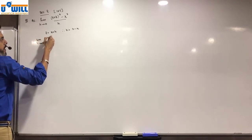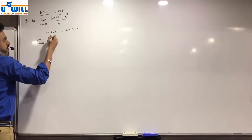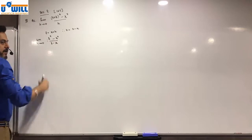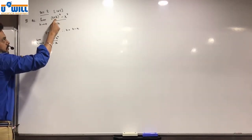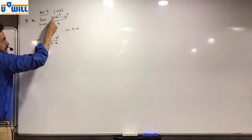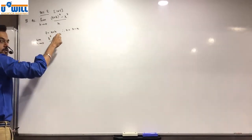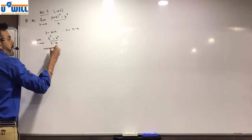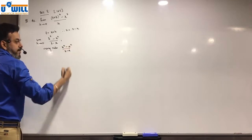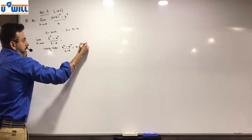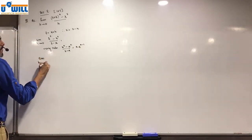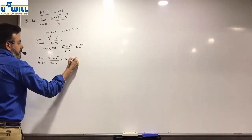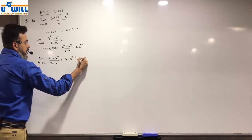Now limit h→0: x+h becomes t, so we have t^7 - x^7 upon t - x. Using the rule [x^n - a^n] / (x - a) = n·a^(n-1), we get: limit h→0 of [t^7 - x^7] / (t - x) = 7·x^(7-1) = 7·x^6. That is the answer.